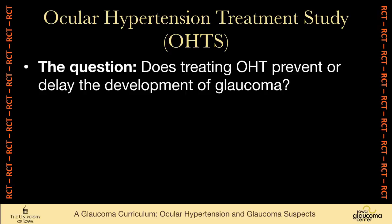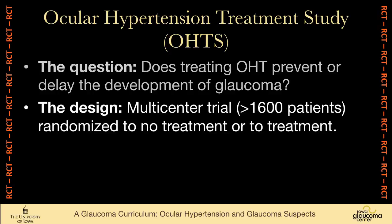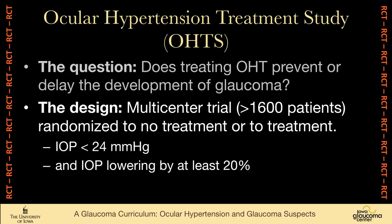The question is: does treating ocular hypertension prevent or delay the development of glaucoma? This is a multi-center trial with 1,600 patients randomized to no treatment or treatment, with the goal of bringing the pressure below 24 millimeters of mercury and lowering it by at least 20%.